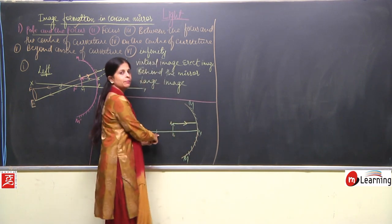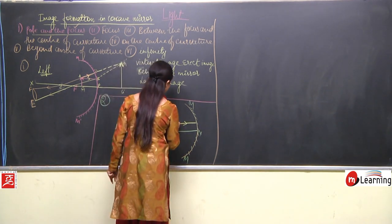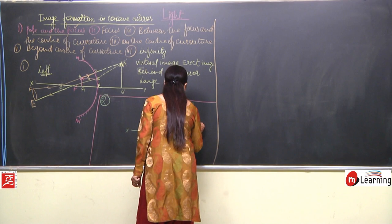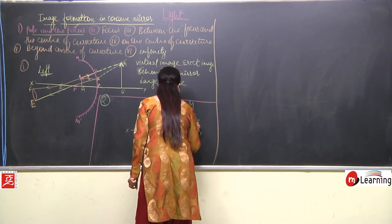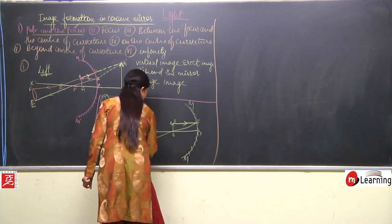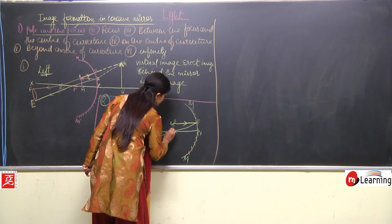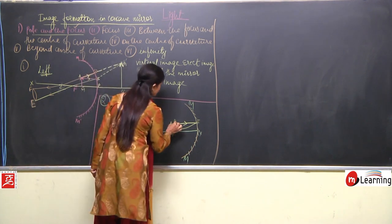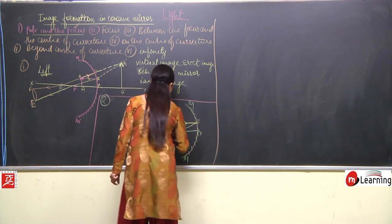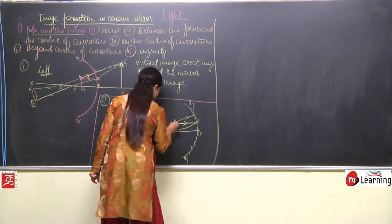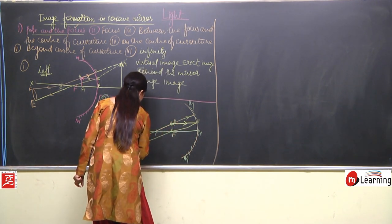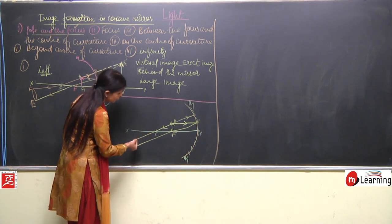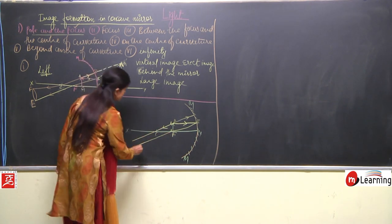We cannot take C because C is center of curvature, so we can take D and E. D is the ray of light coming from the object. After reflection, it passes through the focus. This is our focus and this is our B point. The second ray passes through the center of curvature and definitely it will pass again through the center of curvature only. You can see here, children, these two reflected rays — we cannot write F because F is focus — so we call them G and H.